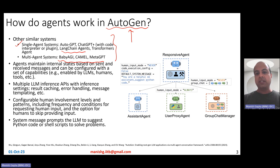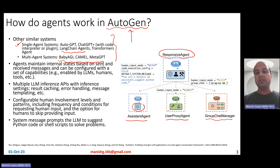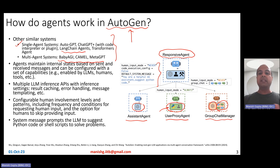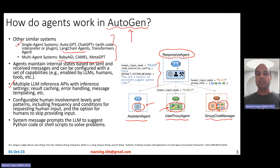Agents in Autogen can be of three main kinds: assistant agent, user proxy agent, and group chat manager — all inherited from the class ConversableAgent, which is a generic agent. The assistant agent makes use of LLM; the user proxy agent makes use of a user or a code executor like shell or Python; and the group chat manager manages a group of agents using an LLM. They used GPT-4 as the default LLM. Each agent has a bunch of properties, maintains internal states based on sent and received messages, and Autogen supports multiple LLM inference APIs with various inference settings like result caching, error handling, and message templating.